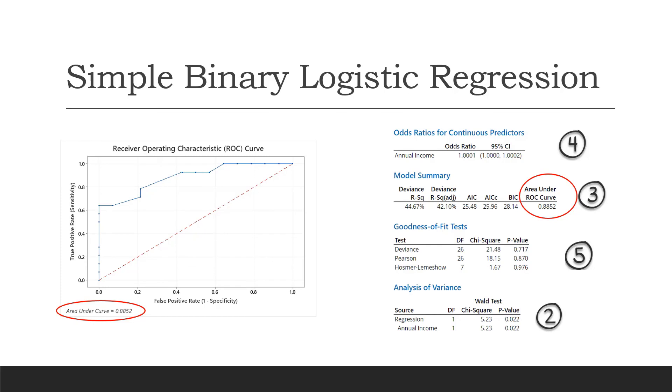After talking about the area under ROC curve, which came out to be 0.8852 in this case, let's look at a few other model summaries. In the next video, we will talk about R square, and then later on, we will talk about AIC, AICC, and BIC as well.